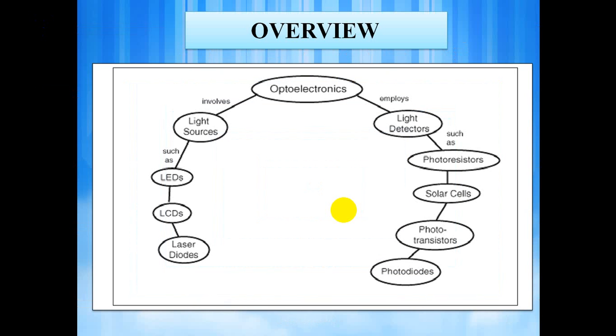We shall first see a general overview of what are the different components of optoelectronics. Optoelectronics need sources as LEDs, LCDs and laser diodes as optical sources for electrical to optical conversion and uses light detectors as photoresistors, solar cells, phototransistors and photodiodes for optical to electrical conversion.